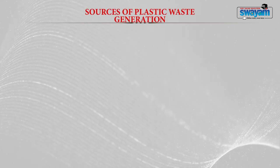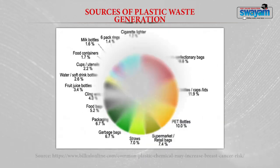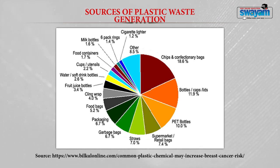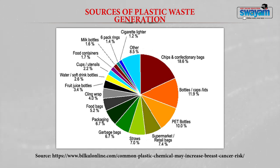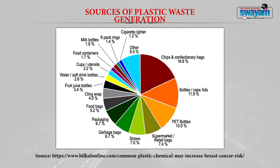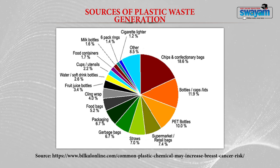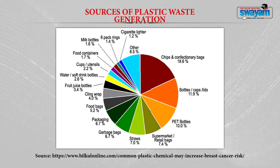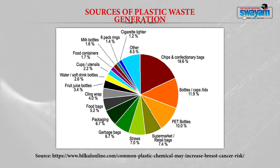Now let us discuss about the sources of plastic waste generation. Plastics are being used in everyday life in every aspect, starting from bathing items to food items, everything comes in plastic-wrapped packs. There are many different categories from where plastic waste is generated. A pie chart shows the different percentage of waste from different sectors. The maximum, 18.6 percent, comes from confectionery like chips packs, lace, and kurkure.